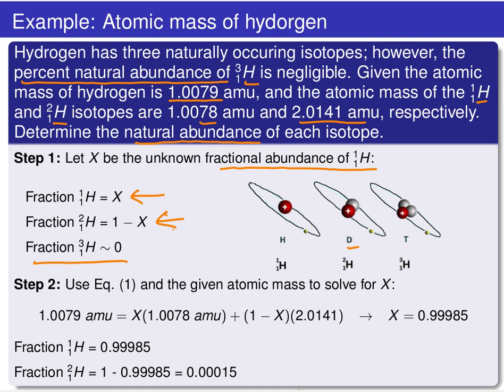Once we know the fractional abundance of both isotopes and the masses — 1.0078 AMU and 2.0141 AMU — we multiply those by their respective fractional abundances. That equals the average atomic mass of hydrogen from the periodic table, giving us a simple equation to solve for X. I encourage you to pause the video and verify that X equals 0.9985. That means the fractional abundance of H-1 is 0.99985, and the fractional abundance of deuterium is 1 minus that value, or 0.00015.